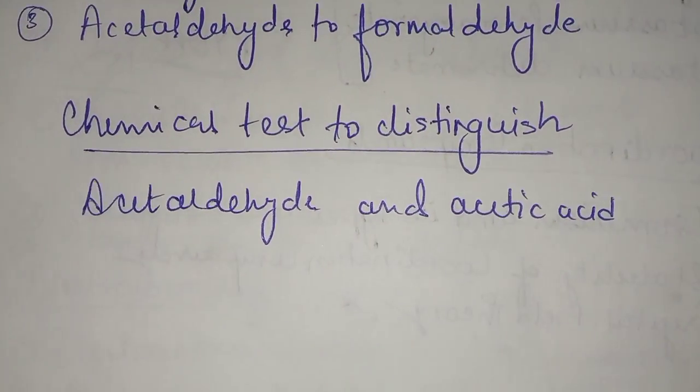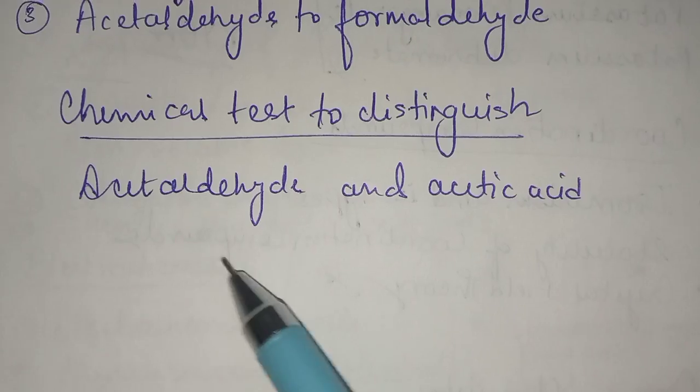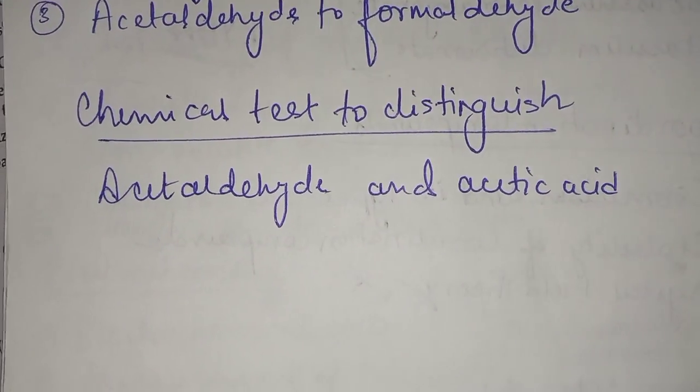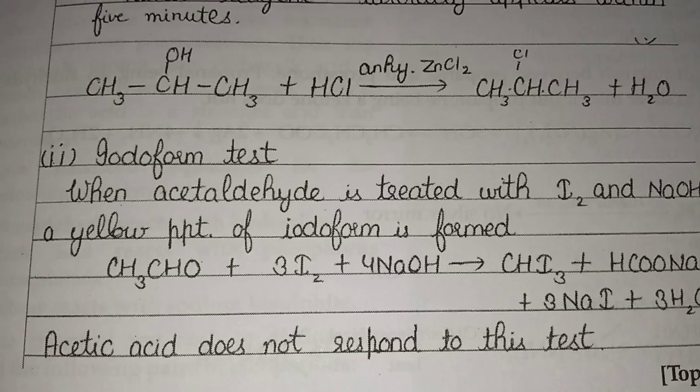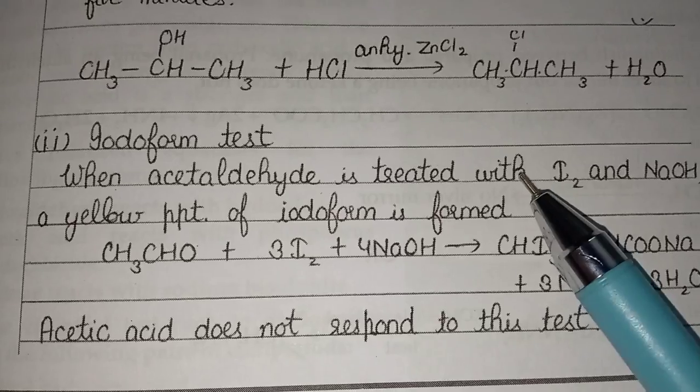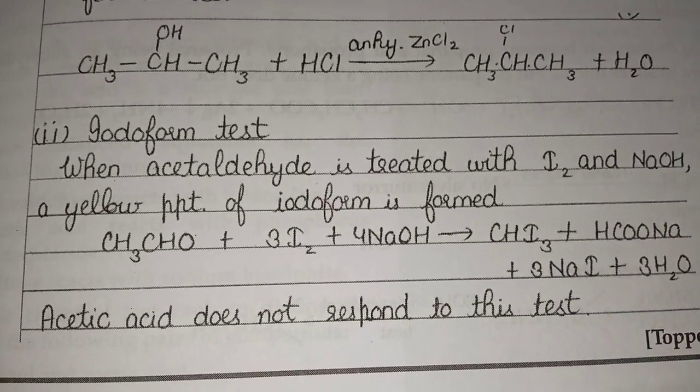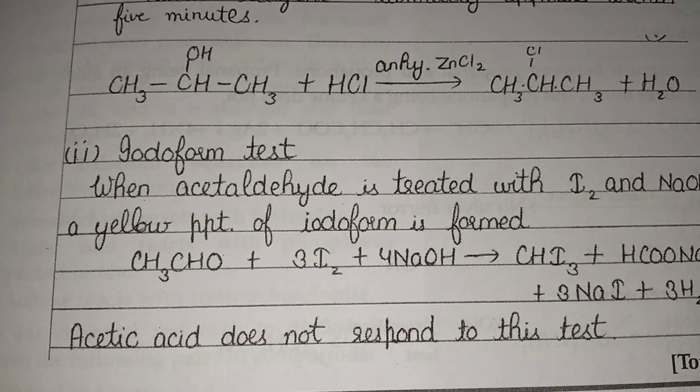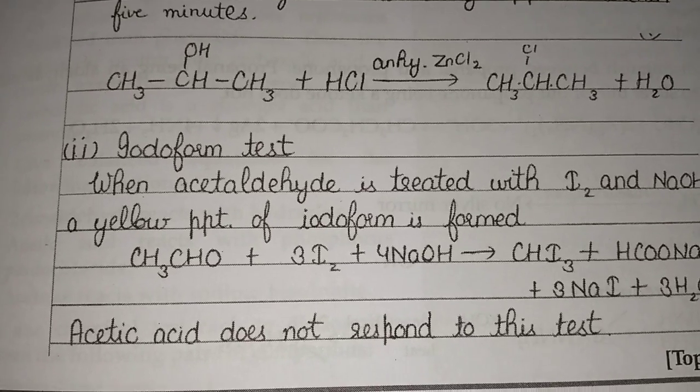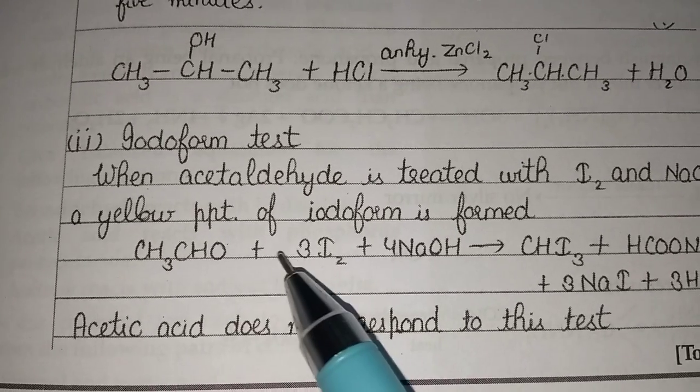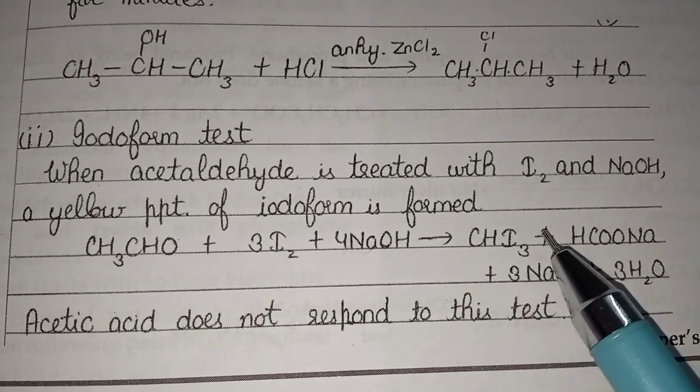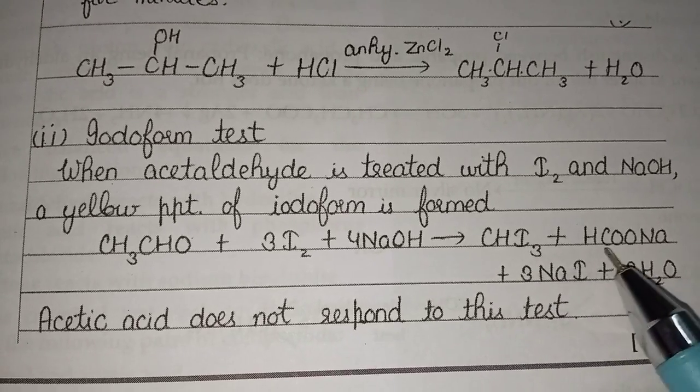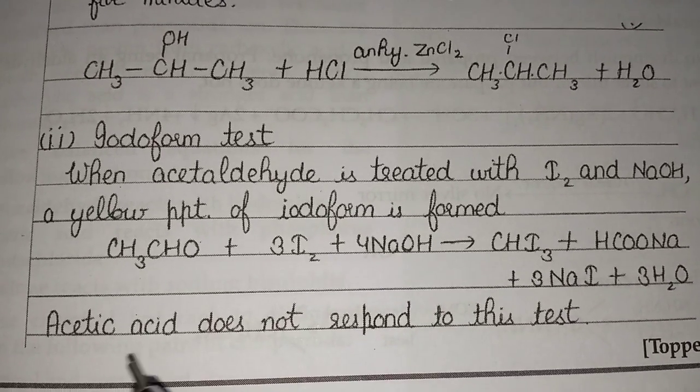And chemical test to distinguish acetaldehyde and acetic acid. For this you can use iodoform test. So when acetaldehyde is treated with I2 and NaOH, a yellow precipitate of iodoform is formed. CH3CHO plus 3I2 plus 4NaOH, you can see CHI3 plus HCOONa and so on. Acetic acid does not respond to this test.